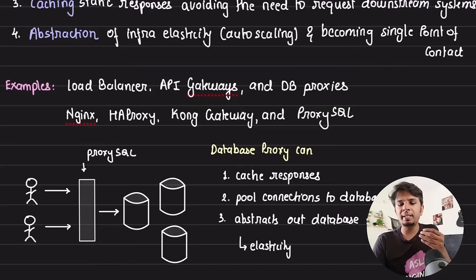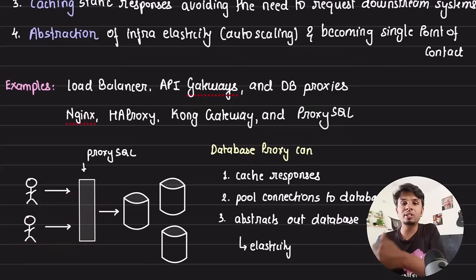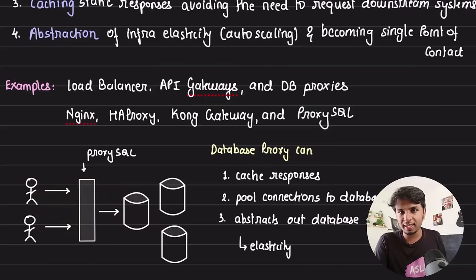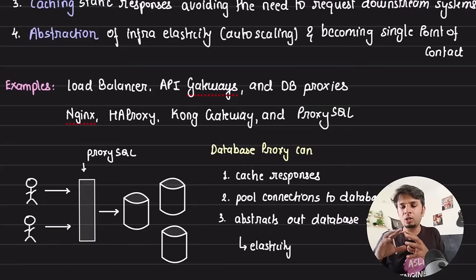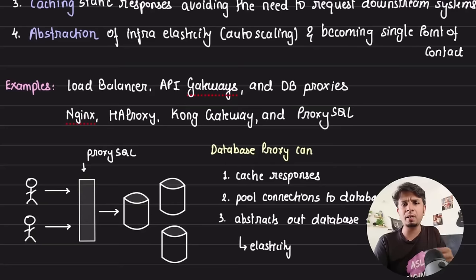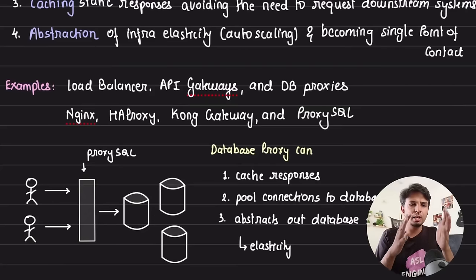Database proxies offer several benefits. First, caching — a common SQL query can be cached at the proxy so only the first request hits the database; subsequent ones are served from cache, reducing database load. Second, connection pooling — it accepts many client connections but maintains a limited number of connections to the database, maximizing utilization. Third, topology abstraction — clients don't know how data is distributed or how many servers exist. Adding servers from three to five is transparent to the user, who has a single point of contact.